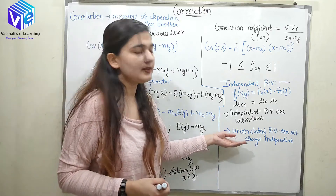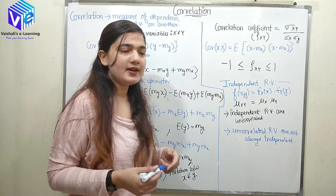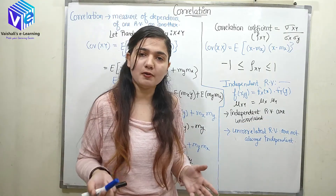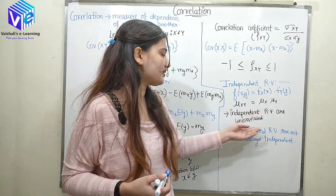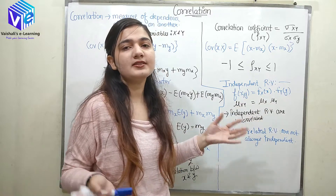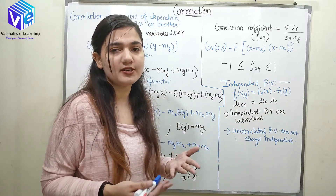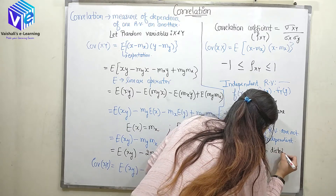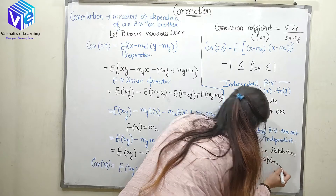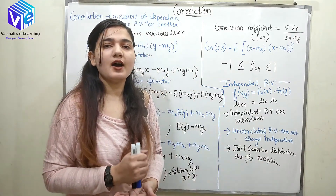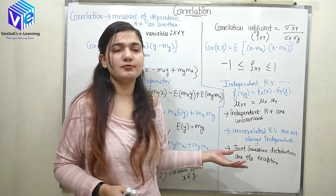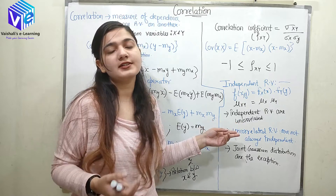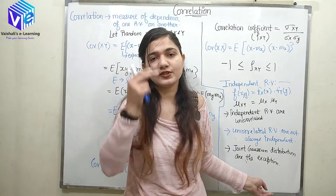Uncorrelated random variables occur when the covariance is 0, but that does not guarantee independence. The reverse is always true: independent random variables are always uncorrelated because the means can be separated. The exception is the joint Gaussian distribution, where both conditions hold — independent random variables are uncorrelated and uncorrelated random variables are always independent.